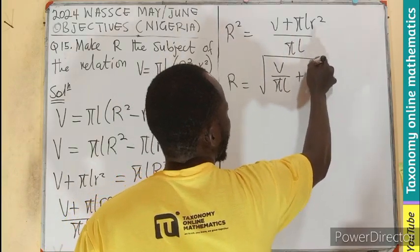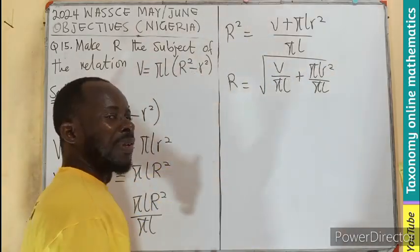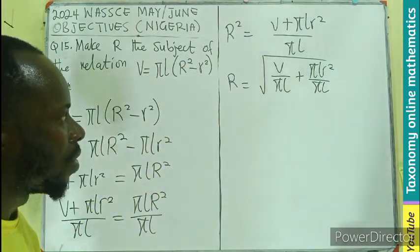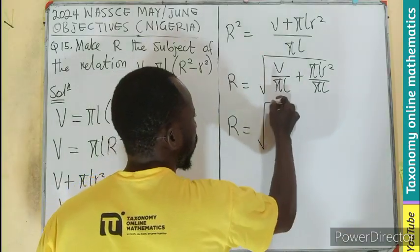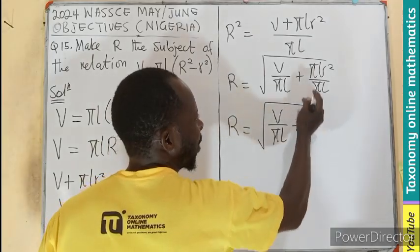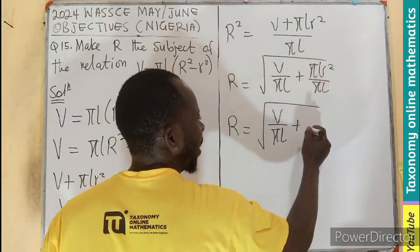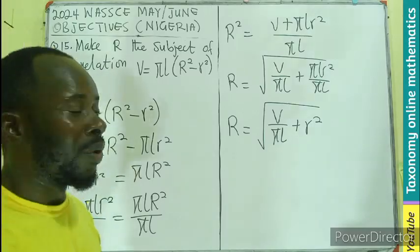I'm going to separate the denominator on the two terms: V over π L plus π L r square over π L. π L will cancel from the second term, giving you R equals the square root of V over π L plus r square.